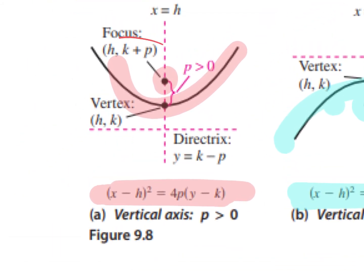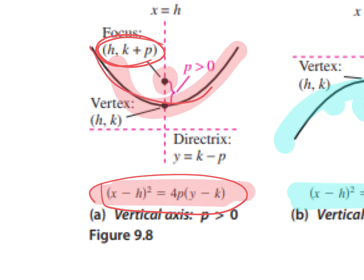Our focus is (h, k + p), and this is the equation we're using. I use this one because my parabola looks like this with the dot up here — that's why I'm using this as my focus and this as my equation.